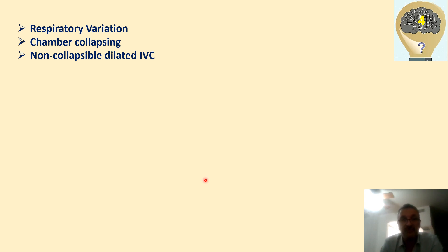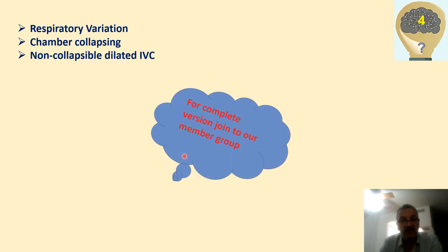The three criteria are: first, respiratory variation — positive on the mitral valve, tricuspid valve, and even in the hepatic vein or aorta. Second, chamber collapsing — any of those chambers, right or left, each of them dependent on the mechanism and cause of the cardiac tamponade. And the third one is a non-collapsible, dilated IVC.